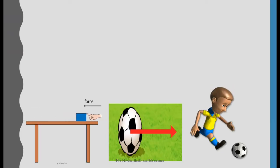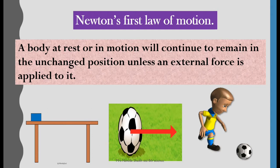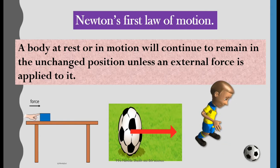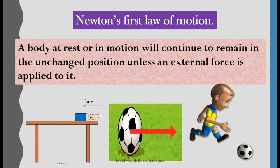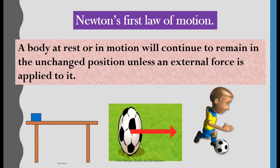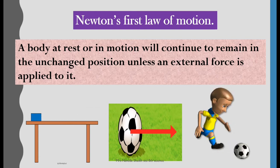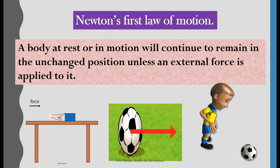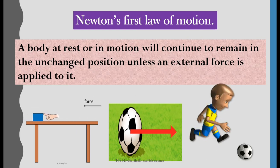Last week, we learned about Newton's first law of motion, which states that a body at rest or in motion will continue to remain in the unchanged position unless an external force is applied to it. For example, if a ball is at rest, it will stay in that state only until someone starts kicking it. And if there is a block kept on a table, that block will stay there until you apply a force to move it. It will keep moving until you stop applying force. Once you stop, it will halt. So there is an amount of force required for an object to move.